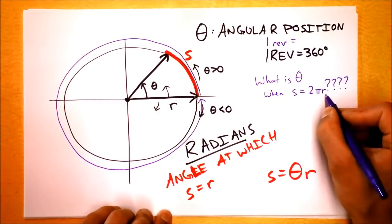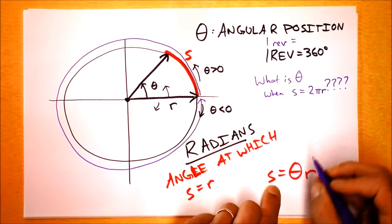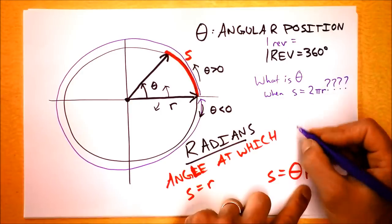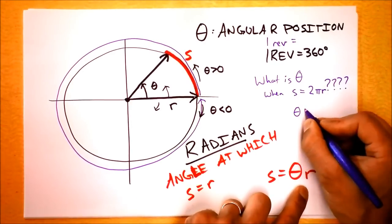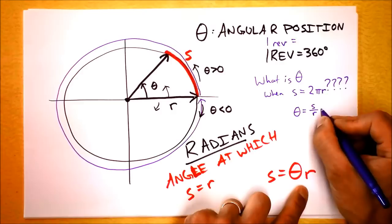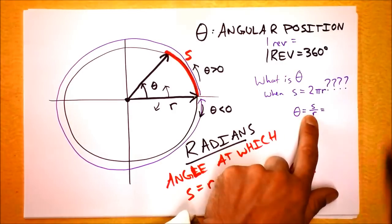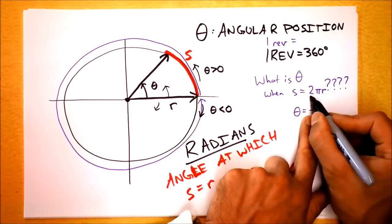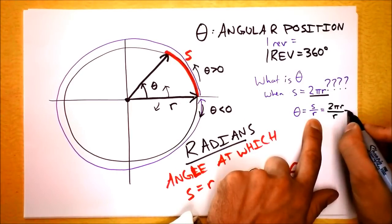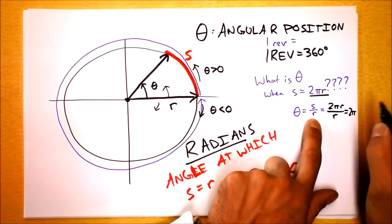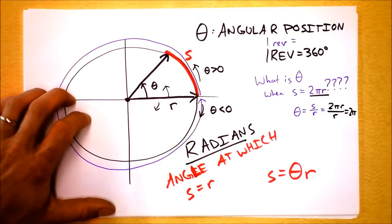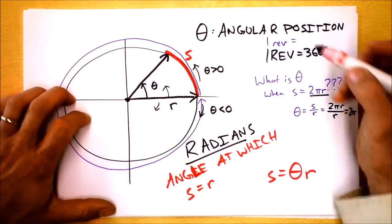What is theta when s is equal to two pi r? We know that s is equal to theta times the number of radians. So we can solve this for theta. Theta equals s divided by r. And so let's try this out right here. Theta is s divided by r. And I'm going to plug in this for s, two pi r. And then I'm divided by r. I'm going to say that theta is two pi. Well, theta is two pi if we've gone all the way around a circle. So one revolution is equal to two pi radians.